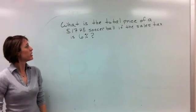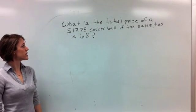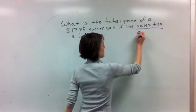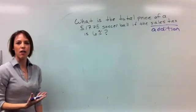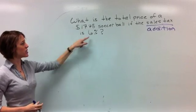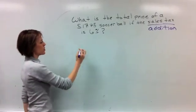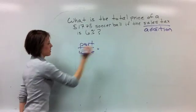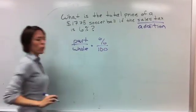Alright, we're going to do example one. It says, what is the total price of a $17.75 soccer ball if the sales tax is 6%? A couple things to remember. If we're talking about sales tax, remember this means addition. It means we're going to add it back on to what we've already paid. So we're going to pay this $17.75, we're going to find out what 6% of that is, and then we're going to add it back. So same thing we've been doing, our percent proportions.